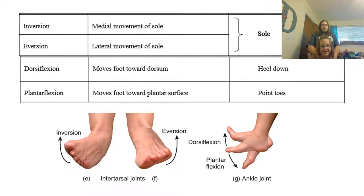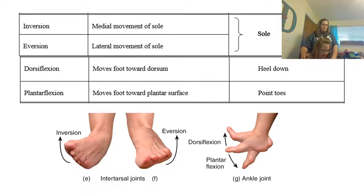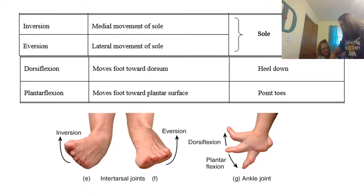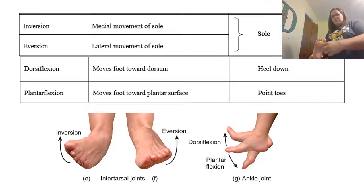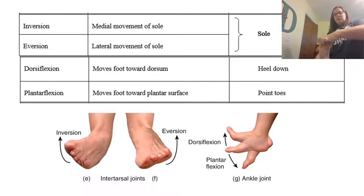The next ones are going to deal with the feet. When we look at the feet, we have what we would call inversion and eversion. With inversion, the foot is pulled where the sole of the foot is going in — this is inversion. Eversion is going to be a lateral movement, where it's going out, like you're pulling your big toe down and moving it out. That is eversion.